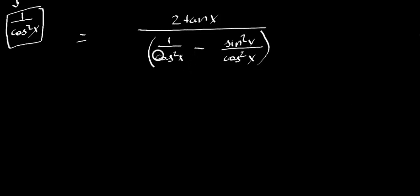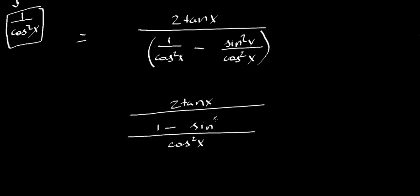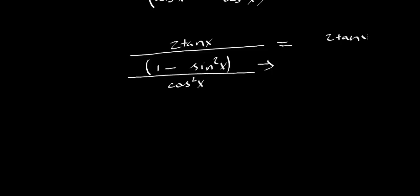You have the same denominators, so you can subtract across. You get 1 minus sin²x over cos²x. One minus sin²x — let me write that.